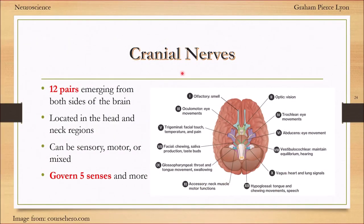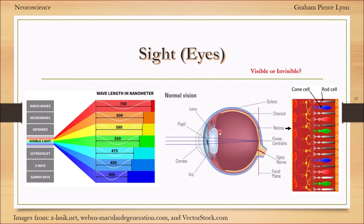Cranial nerves - you have 12 pairs emerging from both sides of the brain located in the head and neck regions. They govern your five senses and more. How do we get data from our environment into our brain? We have our sight - we can see things. We have waves of light, photons, at different wavelengths. It's a very small part of the electromagnetic spectrum that we can see.